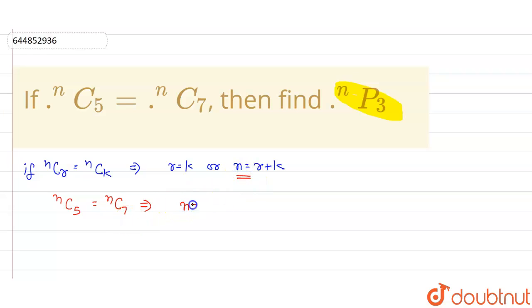That is, my n value equals 5 plus 7, which equals 12. So I got the value of n, that is 12.